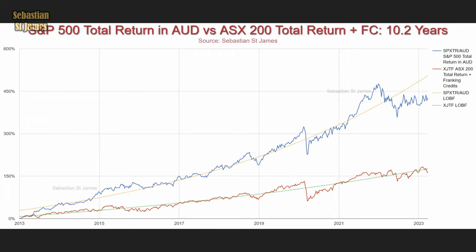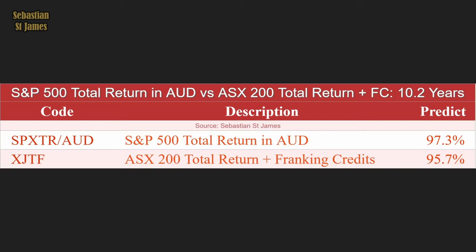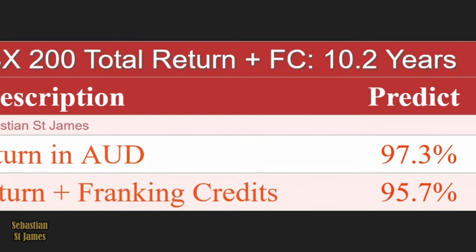These are US shares versus Australia, all in Australian dollars. The S&P 500, converted to Australian dollars, has a predictability of 97.3% — really impressive. The Australian stock market is 95.7%. Technically the US is higher, but they're both so high — both very, very good.